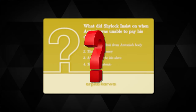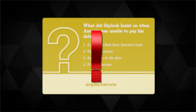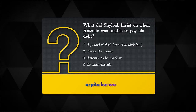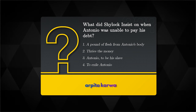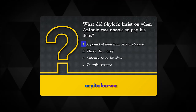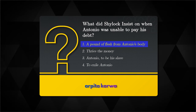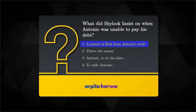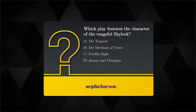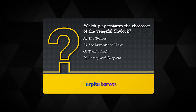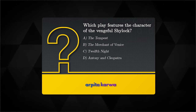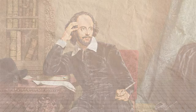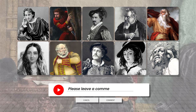Now let's discuss some previous year questions. The first question is: what did Shylock insist on when Antonio was unable to pay his debt? As we discussed, the correct answer is a pound of flesh from Antonio's body. The next question is: which play features the character of the vengeful Shylock? The correct answer is The Merchant of Venice. Which is your favourite Shakespearean character? Let me know in the comments below.